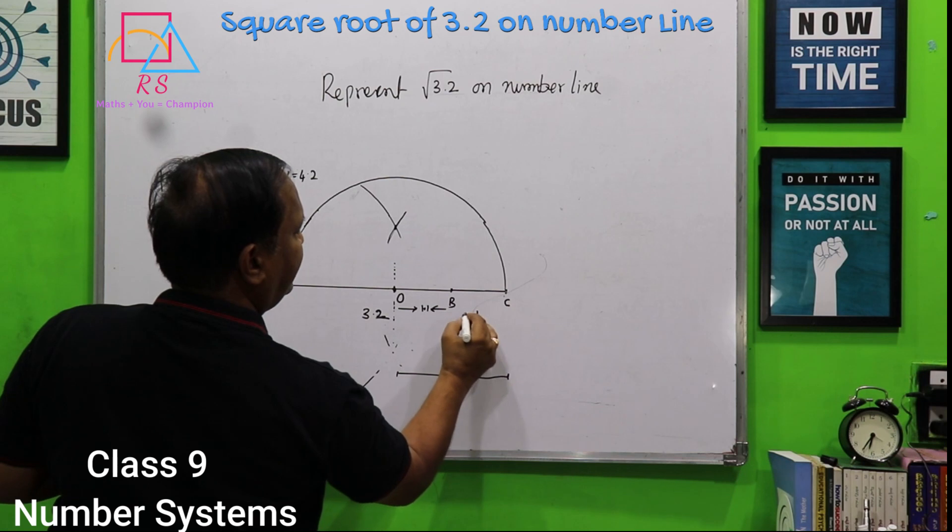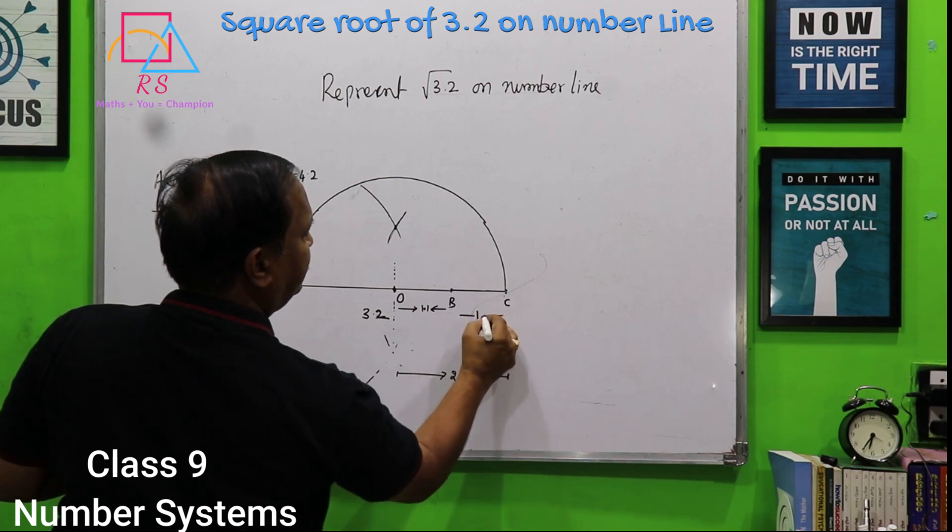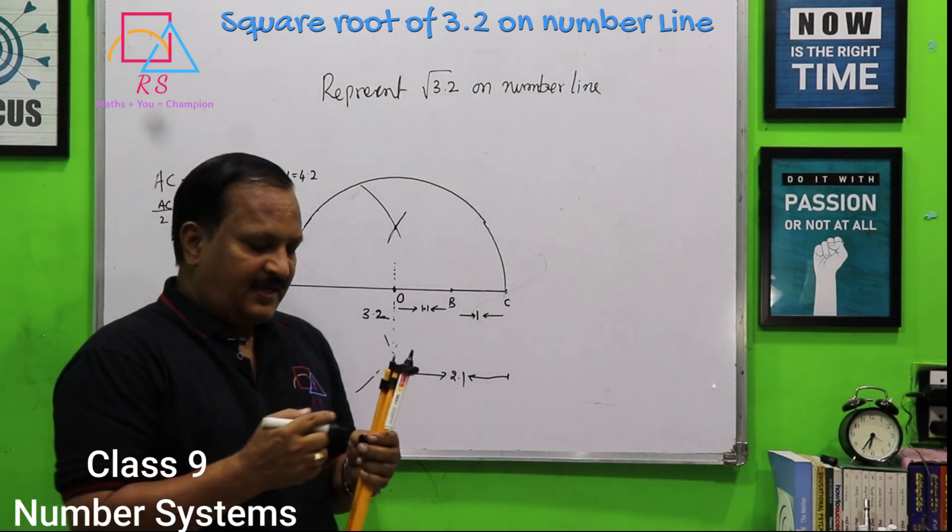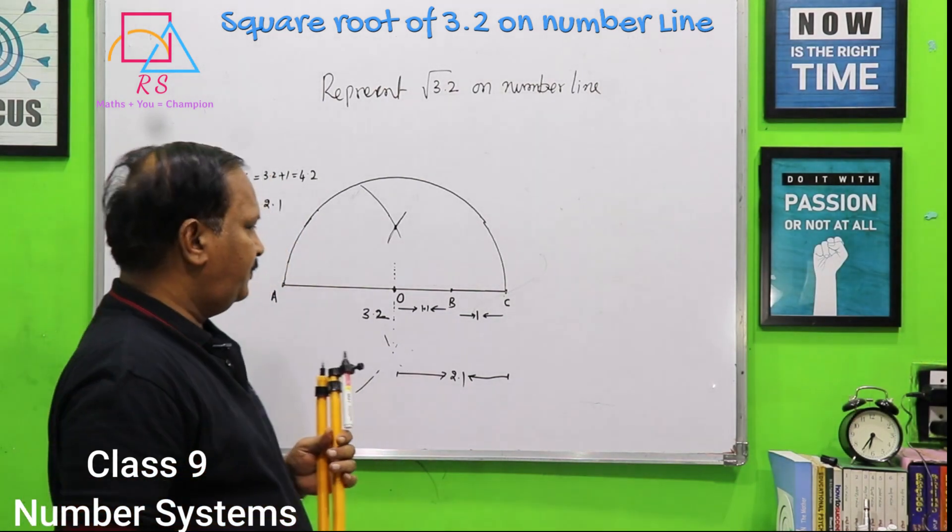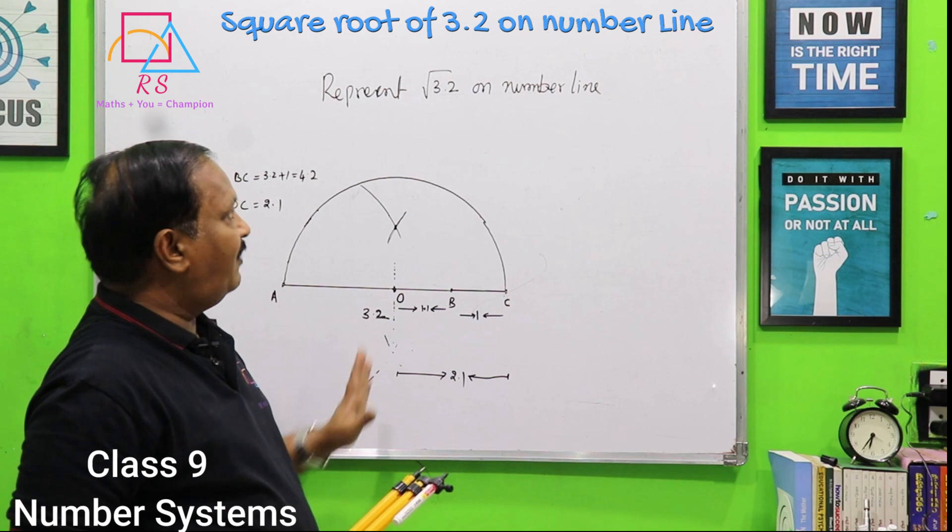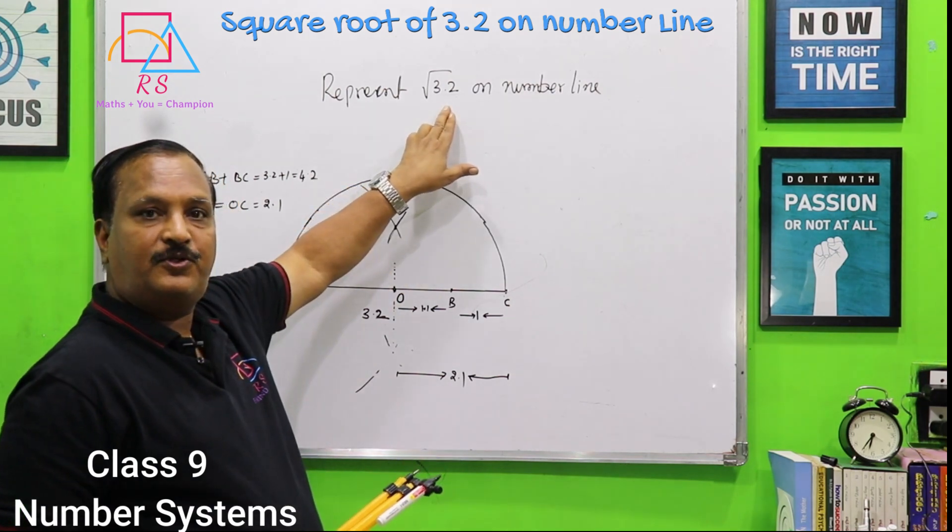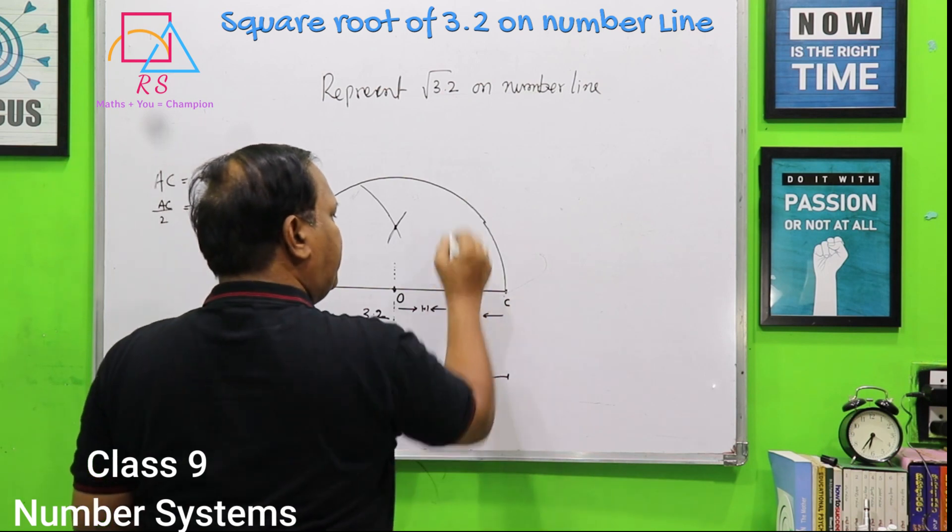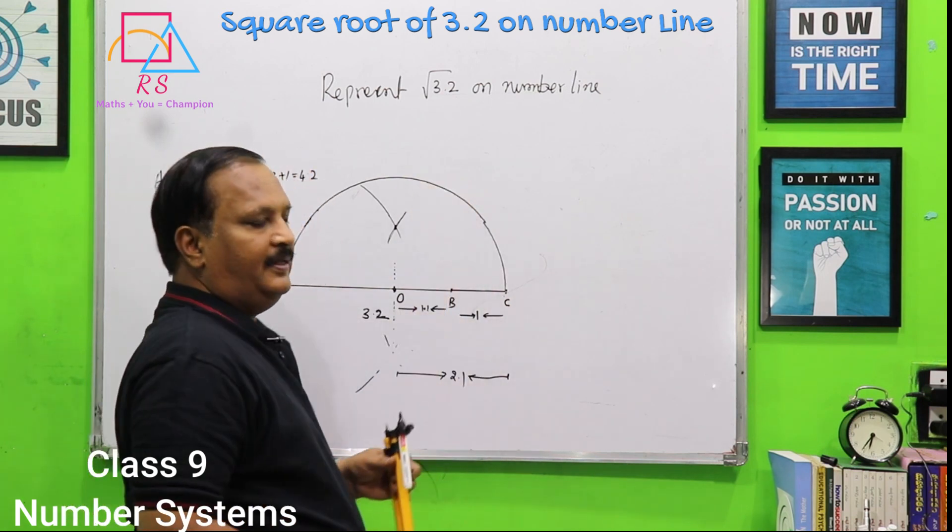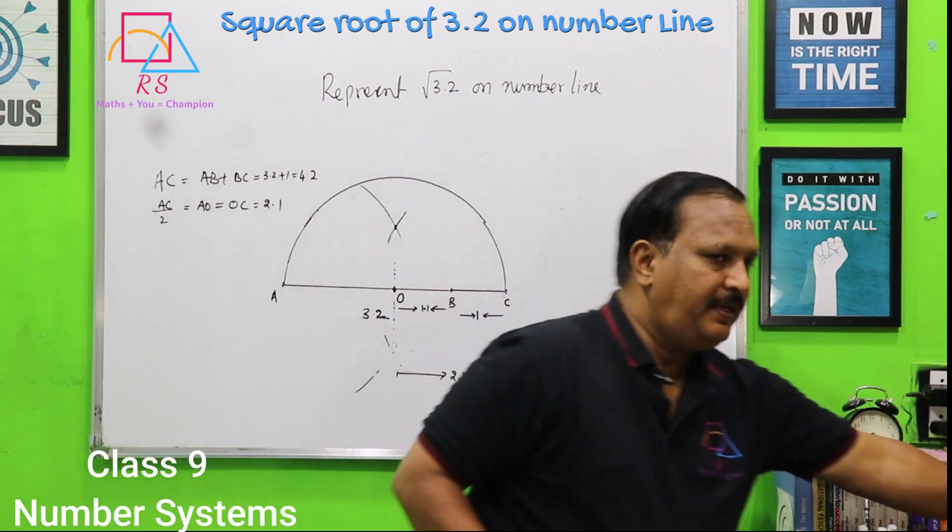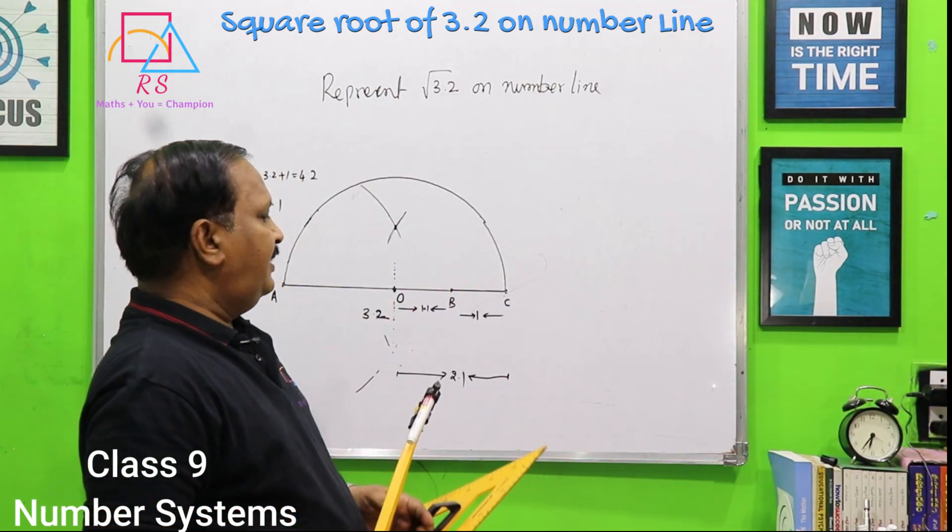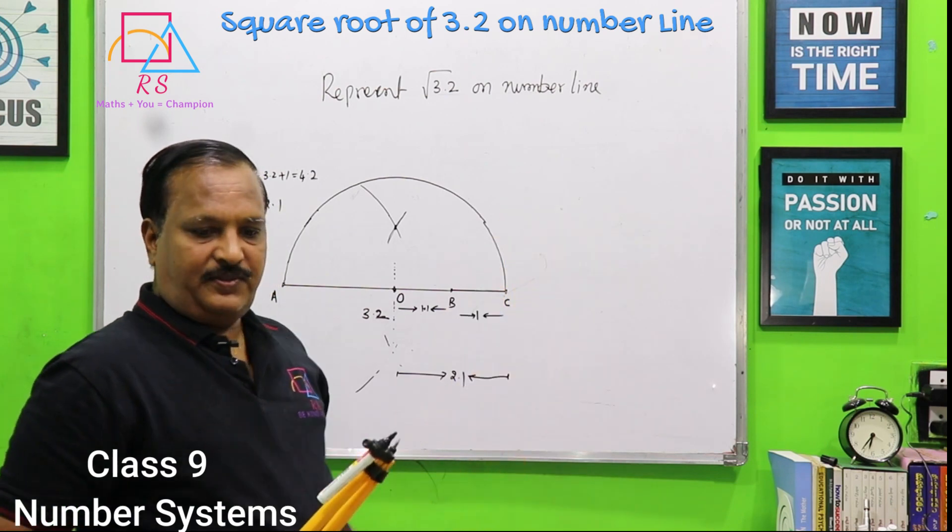These are very simple things. You have to know. Now our target is to find out root 3.2. Again, you have to draw a perpendicular from B. To draw a perpendicular from B, there are two methods. One is using compass. And using set square also.